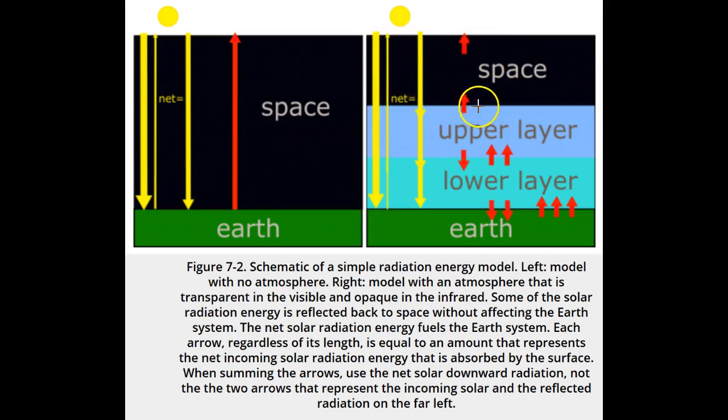Starting at the top of the atmosphere, the upper layer must emit one arrow of infrared radiation up to balance the solar visible radiation energy coming down.